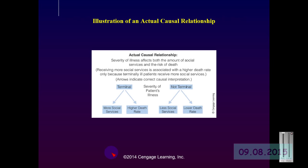By adding another variable to our equation — whether the severity of the illness is terminal or not terminal — we can see that people who are terminally ill receive more social services and have a higher death rate. Both of these outcomes are happening because of the terminal illness. Those who are not terminal receive fewer social services on average and also have a lower death rate.